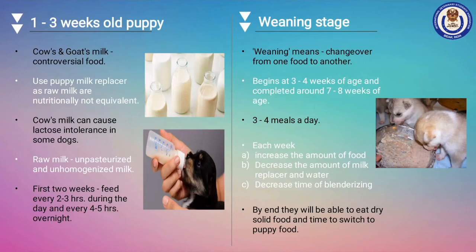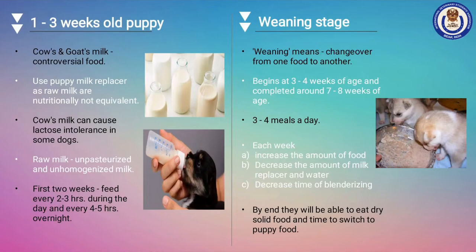Weaning stage: This starts from the third or fourth week of age and is complete at the seventh or eighth week. The main target here is to make puppies less dependent on milk and adjust to solid food, as mostly around the eighth week puppies get adopted and it's hard to provide them milk at that time. The process is to start giving mixed solid and liquid food, using milk or water as the liquid, and special weaning food or puppy food as the solid. Every week, decrease the liquid content and increase the solid food. By the end of this stage, they will be completely weaned to solid food.